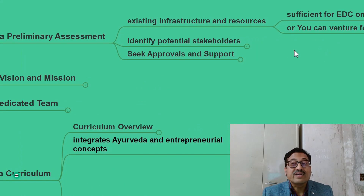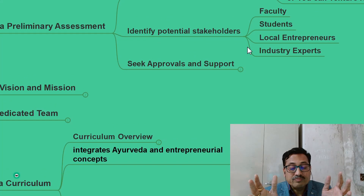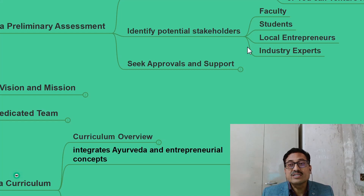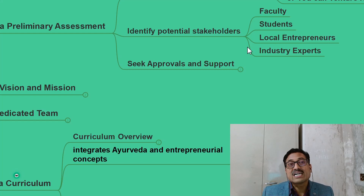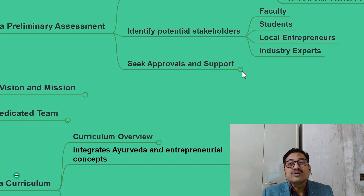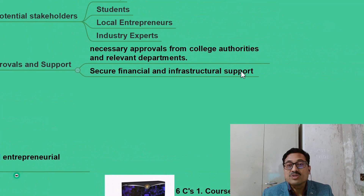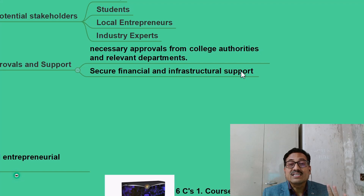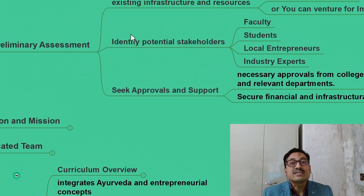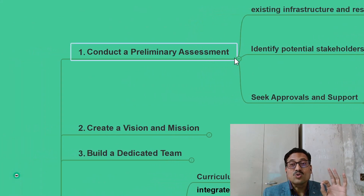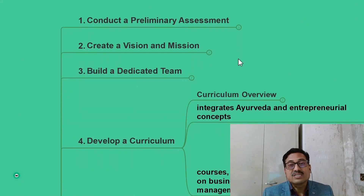You need to identify the potential stakeholders of your institution — it may be faculty, it may be students — and you are supposed to connect with local entrepreneurs and industry experts in and around you, so that as your entrepreneurial development cell starts functioning, they will contribute in developing your cell and nurturing those innovative minds. Then you need to seek approvals and support from your organization — necessary approvals from the college authorities and departments — and secure financial and infrastructure support from the management.